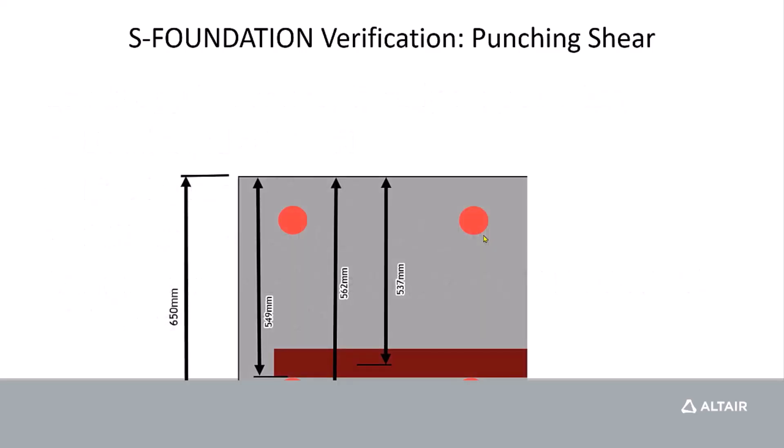The first thing we want to do is understand the effective depth that we're using for punching shear, and I've drawn a little diagram to explain this. In S-FOUNDATION, we have reinforcement in both the x and y directions, whereas most hand calculations will just assume one direction at a time.